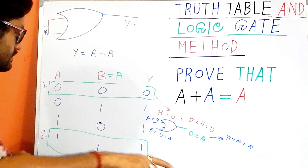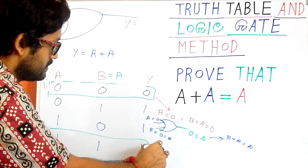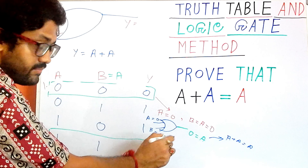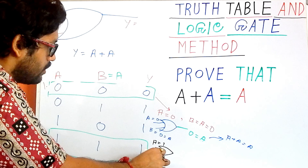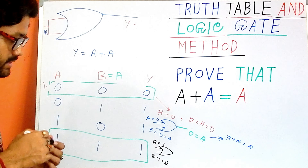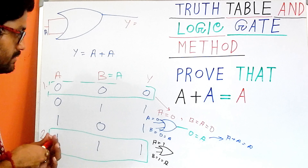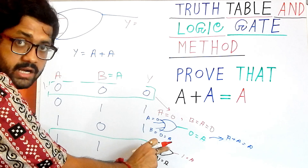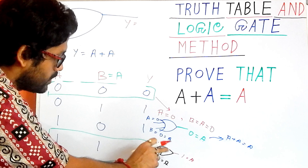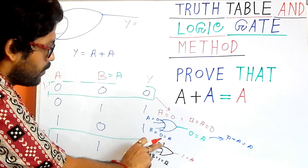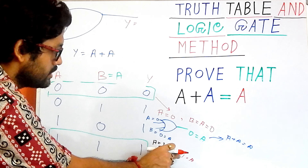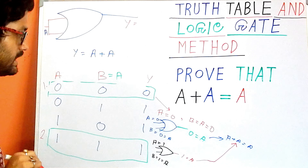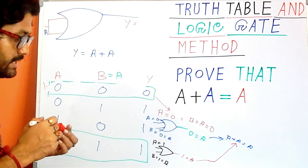For condition two — the fourth row — if I take A as one and B as one which is also equal to A, for that combination I get the output which is one. One which is equal to A, since the input is one. So for the one-one combination the output is one, which is equal to our input A.